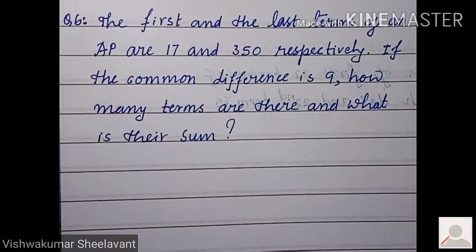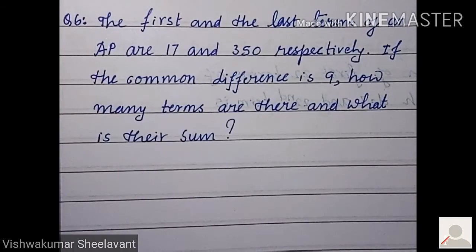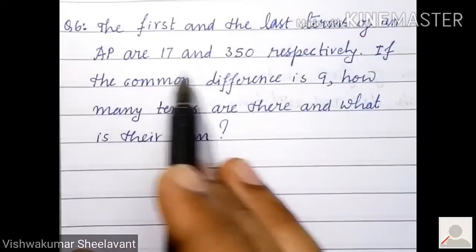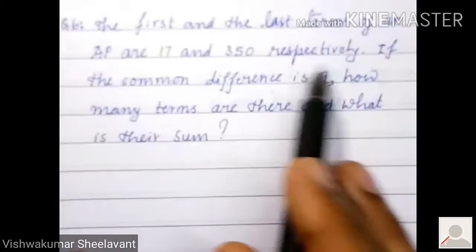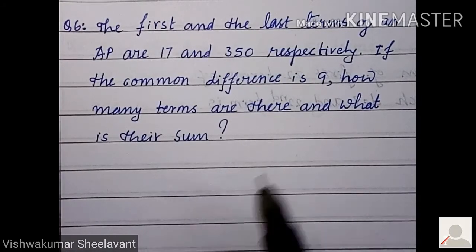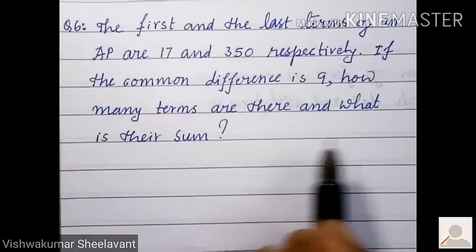I'll take the sixth question. The first and last terms of an AP are 17 and 350 respectively. If the common difference is 9, how many terms are there and what is their sum? Now, to make use of the an formula.